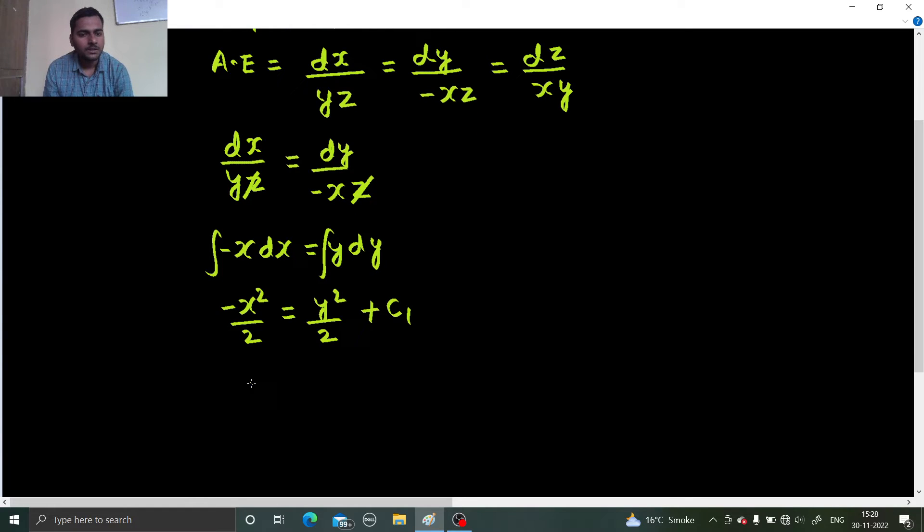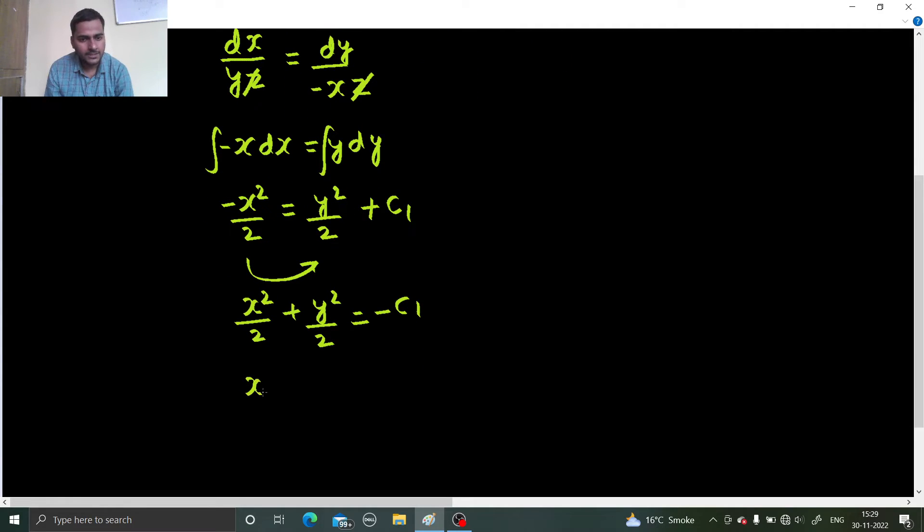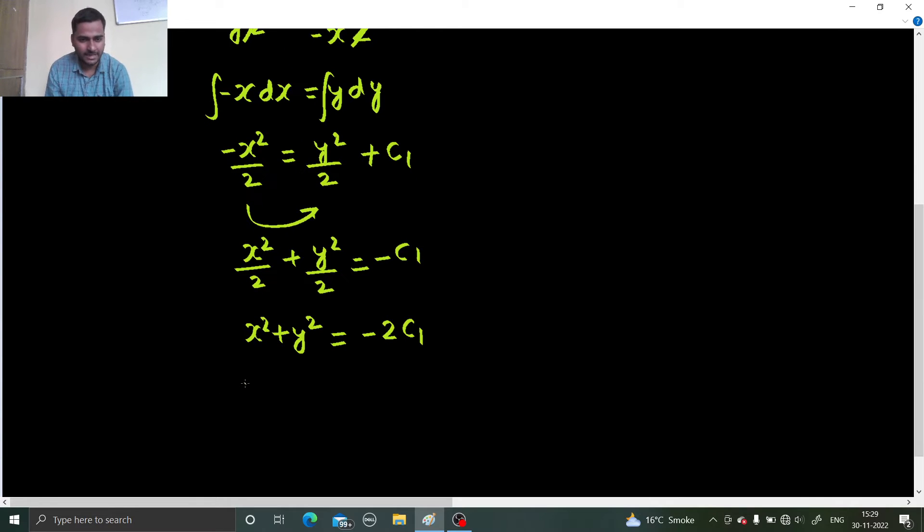Fine. So what I can do is take this term to the other side and this constant to the other side just to look beautiful. So x square by 2 plus y square by 2 equals to minus c1. So your x square plus y square, this 2 which was on the denominator, I am sending that to the other side. So this constant is not looking good enough. So let's change it and write it as minus 2 c1 as c2. So this is the first equation which we have got.